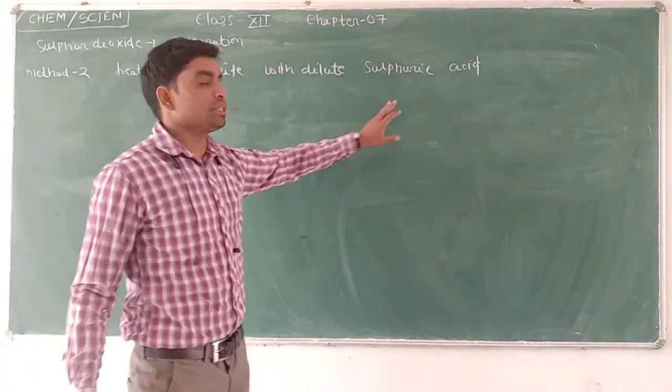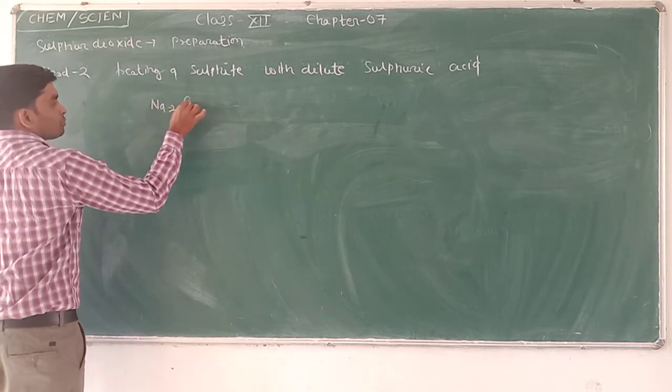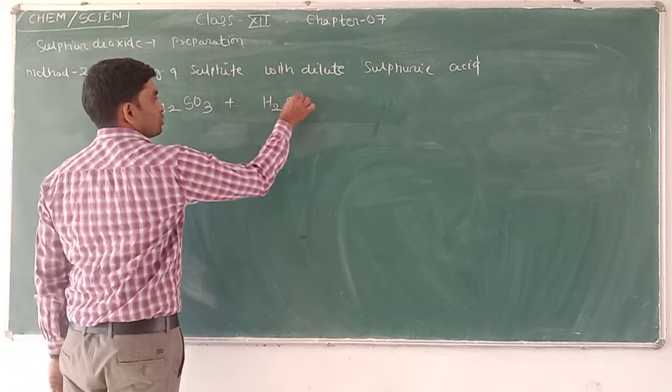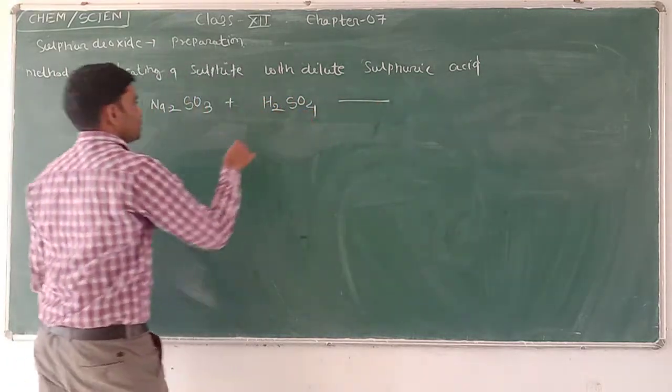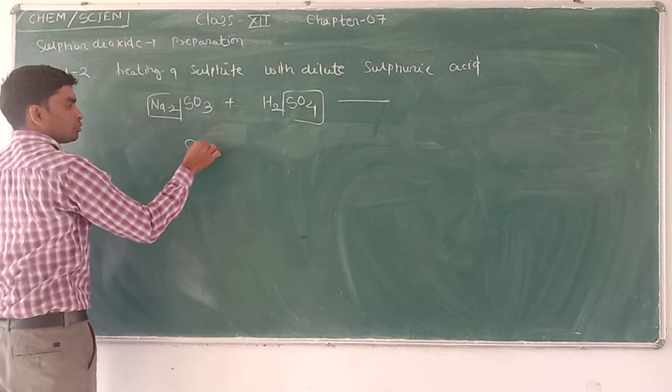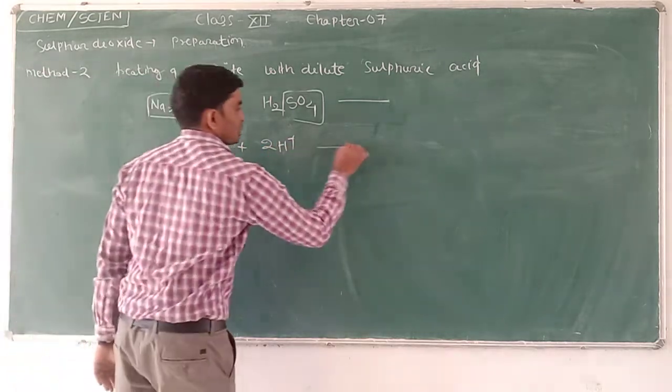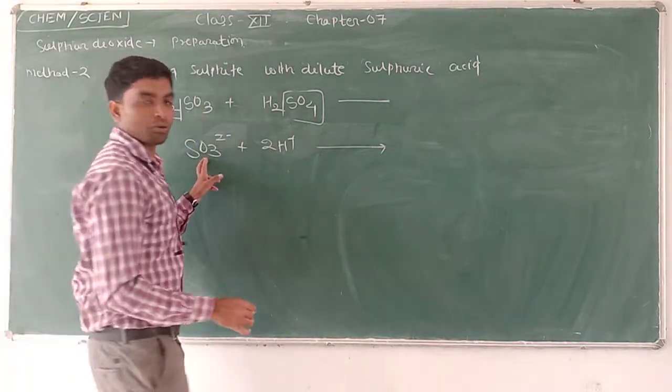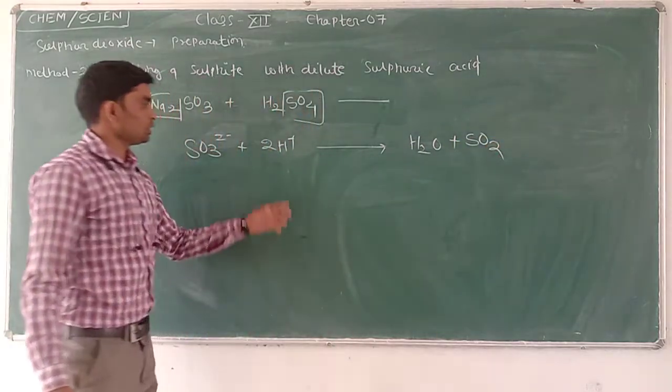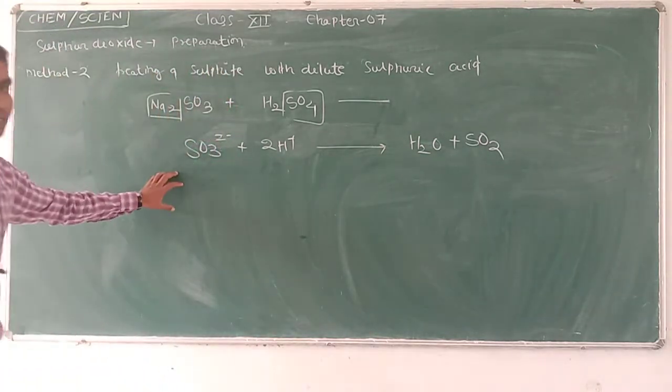Another preparation method uses sodium carbonate. When sodium carbonate reacts with dilute sulphuric acid: Na2CO3 plus H2SO4 gives Na2SO4 plus H2O plus CO2. Here two hydrogens, one oxygen, and remaining one sulphur with oxygen gives sulphur dioxide.